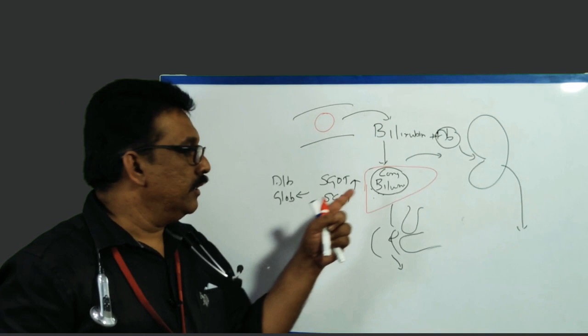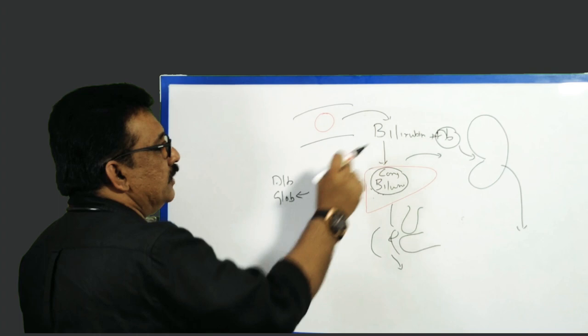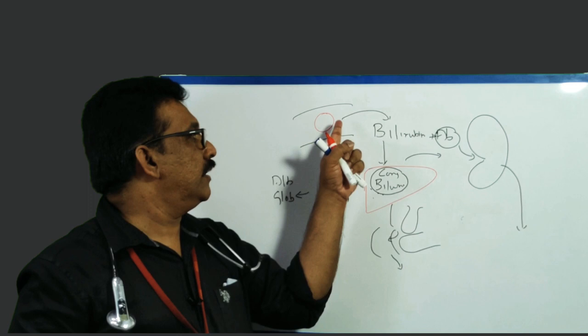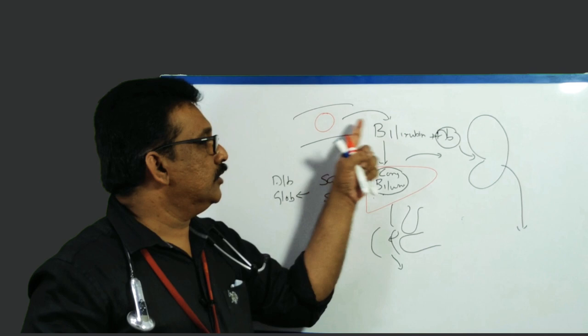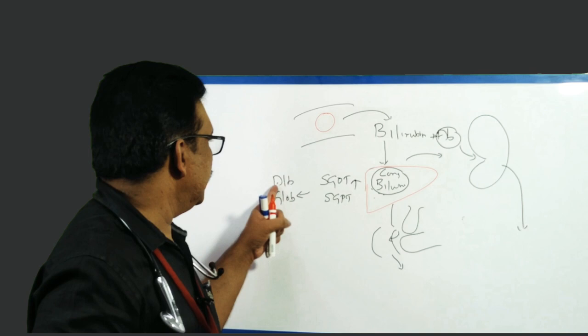Normally albumin is always more than globulin. In chronic liver disease — like chronic hepatitis or chronic alcoholic liver disease — globulin will be more than albumin. So if someone has jaundice, SGOT/SGPT is mildly elevated, and albumin is lower than globulin, you have to suspect chronic liver disease. This is how you make a clinical diagnosis of pre-hepatic or hemolytic jaundice versus hepatic jaundice.